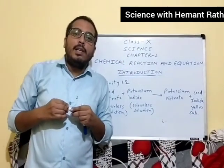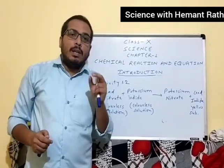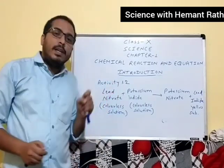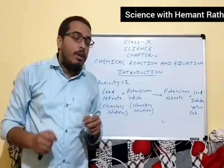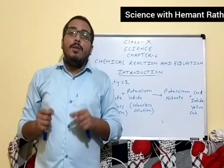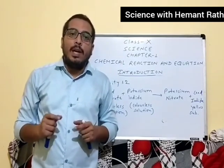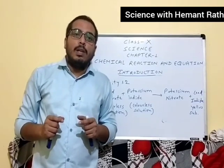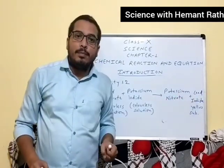Another activity: we have to take a few solution of lead nitrate and take a few solution of potassium iodide. When we mix these two colorless solutions, we will get a substance which has yellow color, that is called lead iodide.